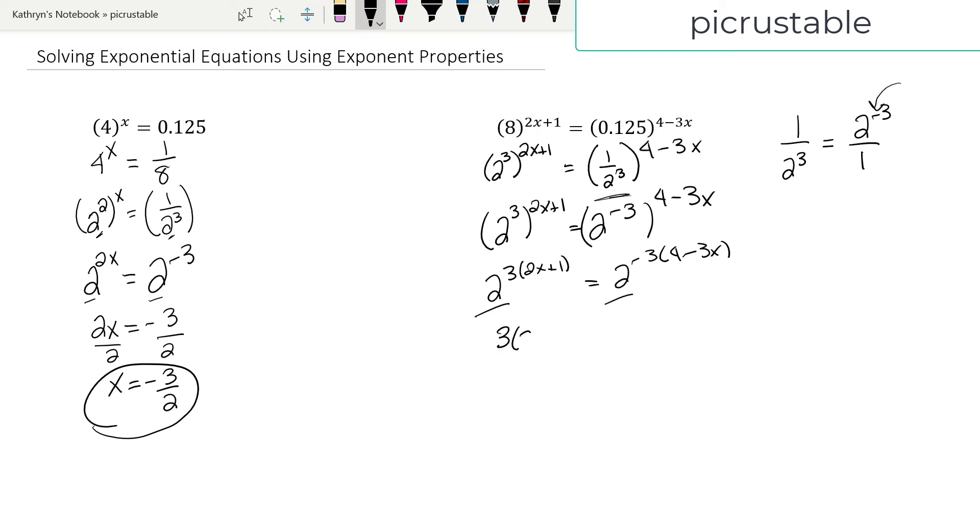We're going to do 3 times 2x plus 1 equals negative 3 times 4 minus 3x. I'm going to use the distributive property. I know that I could divide both sides by 3 or negative 3, but let's do the distributive property.